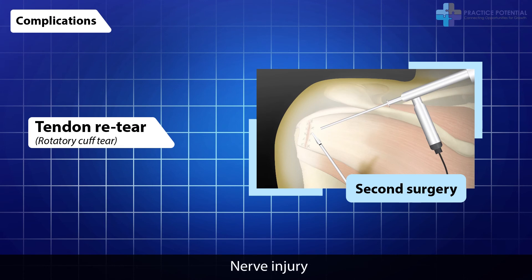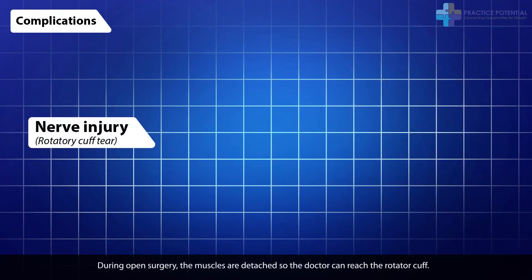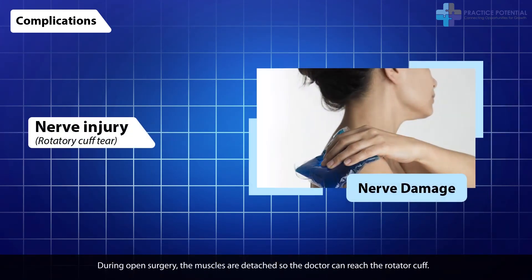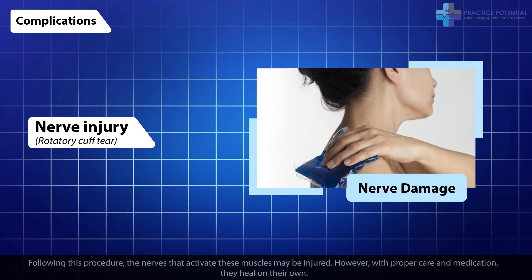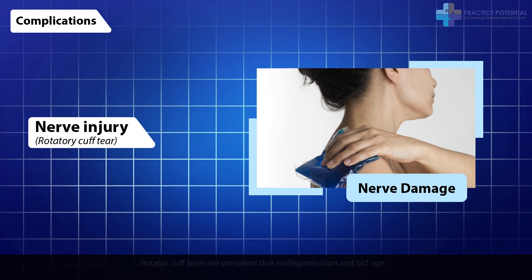Nerve injury. During open surgery, the muscles are detached so the doctor can reach the rotator cuff. Following this procedure, the nerves that activate these muscles may be injured. However, with proper care and medication, they heal on their own.